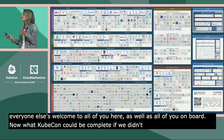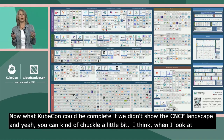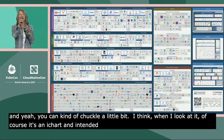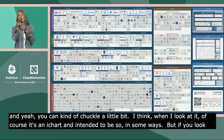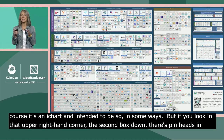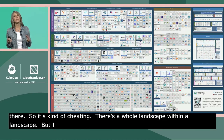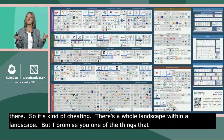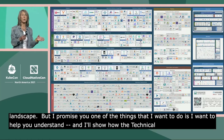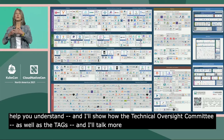What KubeCon would be complete if we didn't show the CNCF landscape? You can chuckle a little — it's an eye chart, and in some ways it's intended to be. In that upper right-hand corner, the second box down, there's a whole bunch of pinheads, so that's kind of a landscape within a landscape. But I want to help you understand how the Technical Oversight Committee as well as the TAGs help us keep this all under control — I'll give you a decoder ring to the cloud native landscape.